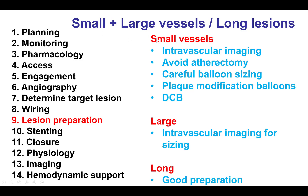Moving on to lesion preparation, for both small and large vessels, intravascular imaging is important to accurately determine the size of the vessel. Quite often, small vessels are larger than they seem, and for large vessels, visual estimation of vessel size can often be wrong. For small vessels, it is best to avoid atherectomy, especially if there is tortuosity. Size balloons carefully to minimize the risk of dissections. Plaque modification balloons may also reduce dissection risk, and some have proposed drug-coated balloons as primary therapy without stenting in small vessels. For long lesions, good preparation is important to reduce restenosis risk because long stent length is often required.